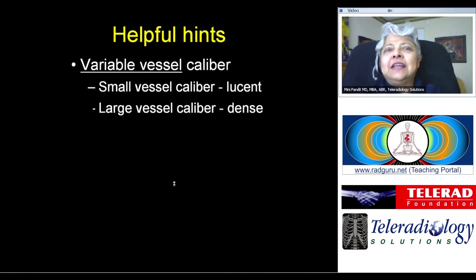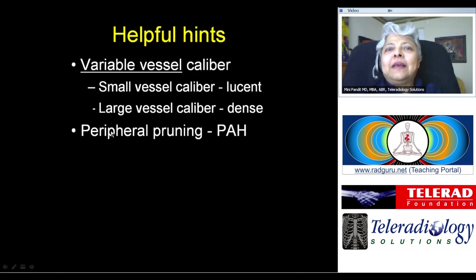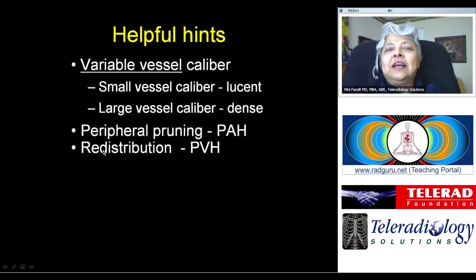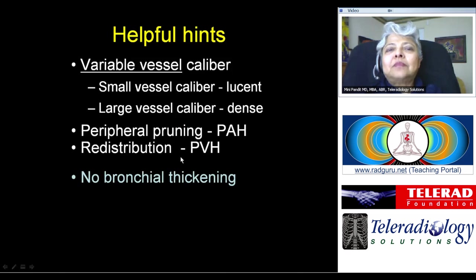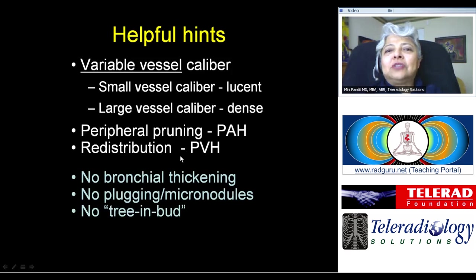Helpful hints in this situation include variable vessel caliber — smaller vessels will be present in the lucent lung zones, larger vessels in the denser areas. In pulmonary arterial hypertension you will get peripheral pruning. In pulmonary venous hypertension you will get redistribution, so in patients with left heart failure and pulmonary edema you will see redistribution. And remember, there will be no bronchial wall thickening, no micronodules, and no tree-in-bud appearance.